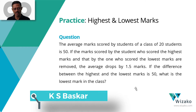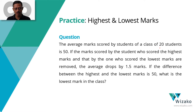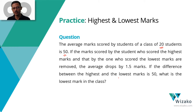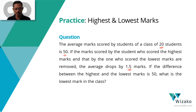The average mark scored by students of a class of 20 students is 50. So number of students is 20, and their average marks is equal to 50. If the marks scored by the student who scored the highest and the one who scored the lowest are removed, the average drops by 1.5 marks.